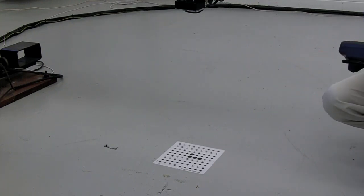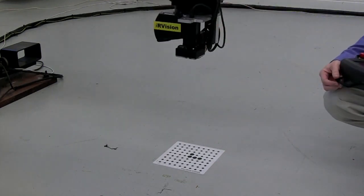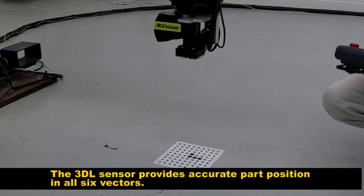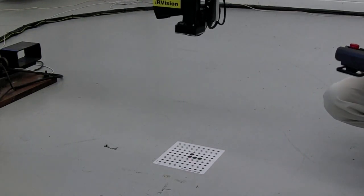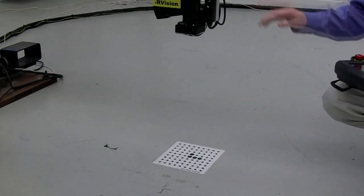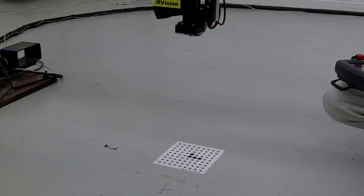Once the robot knows where the calibration grid is in space, we can position the sensor over top of the calibration grid and take a picture of the grid. Then we'll move the sensor up a couple inches and take another picture of the grid. That's enough information for the robot to know where this 3DL sensor is on the end-of-arm tool.